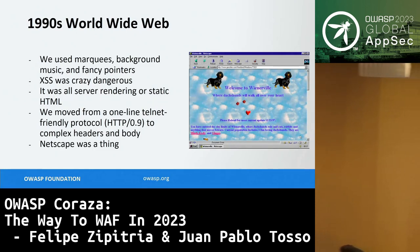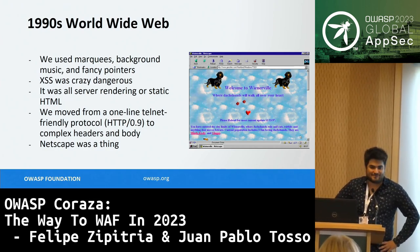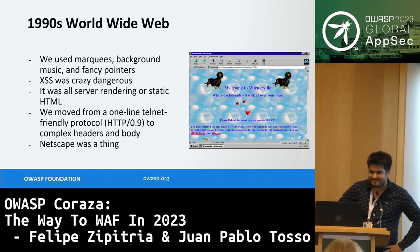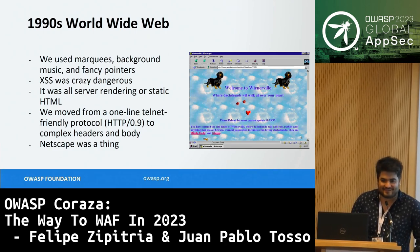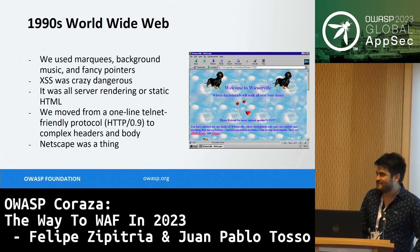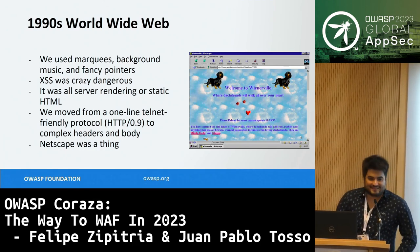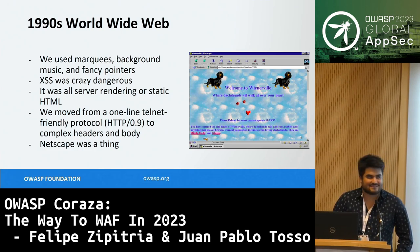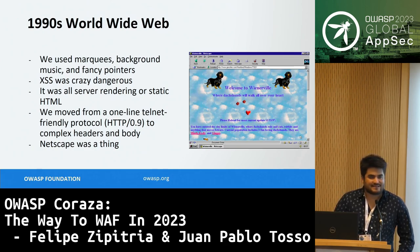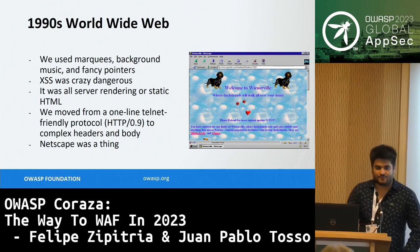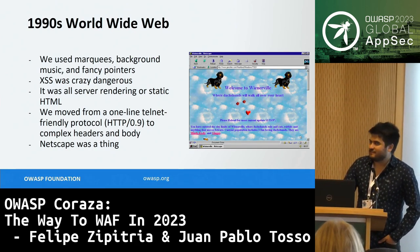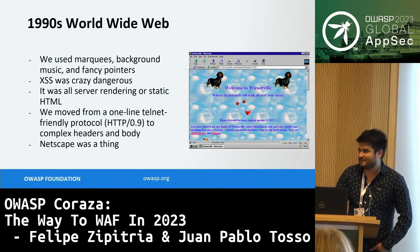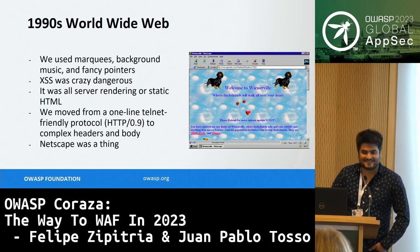Most of us remember the 90s World Wide Web — fancy cursors, background music, marquees everywhere. Servers were rendering static HTML with some CGI receiving forms. When the internet evolved, we started looking for vulnerabilities that would really affect users and companies, like cross-site scripting, SQL injection, and many vulnerabilities that have changed over time in terms of risk. We also had HTTP 0.9, which only supported the GET method and wasn't sufficient for the complex attacks we see today.